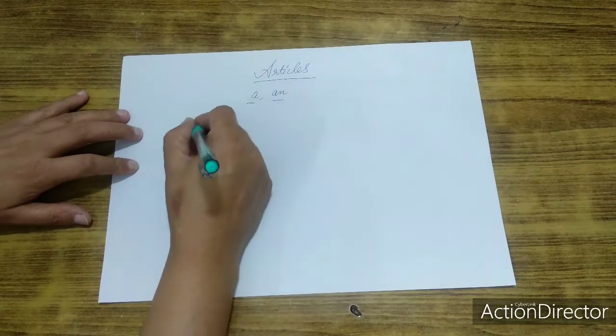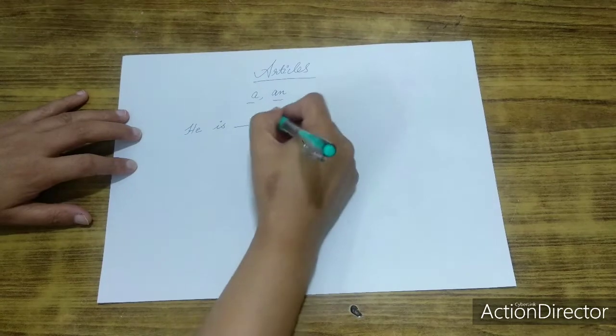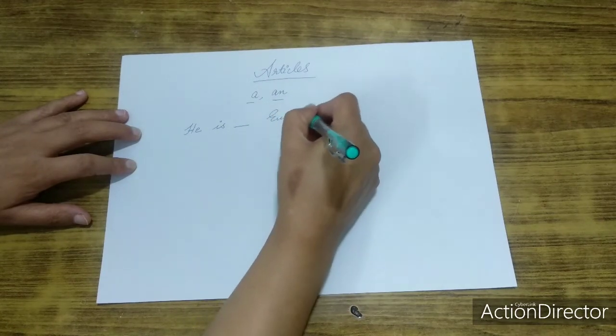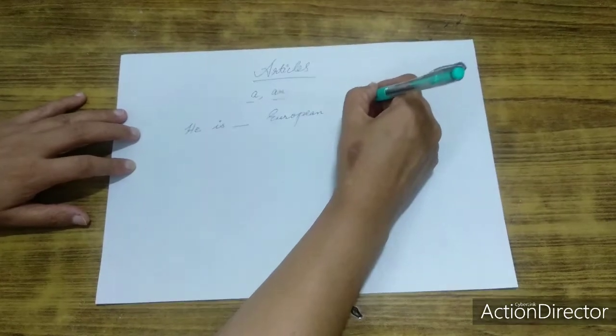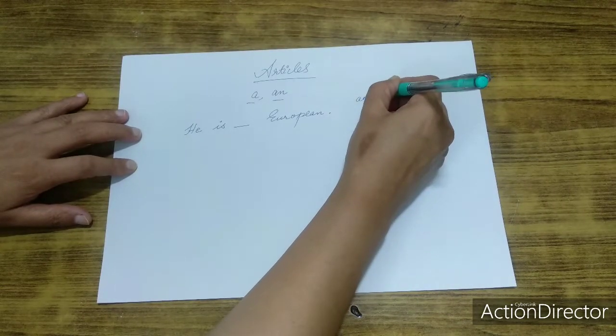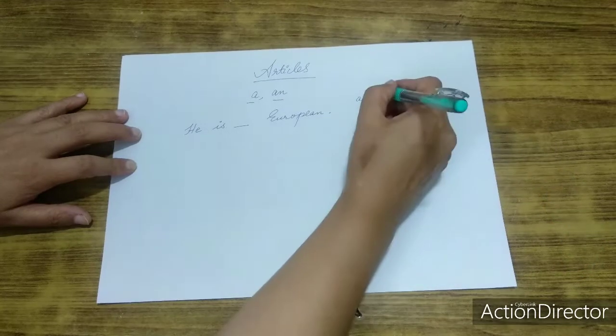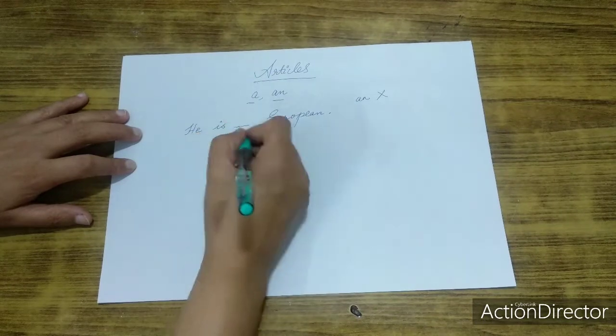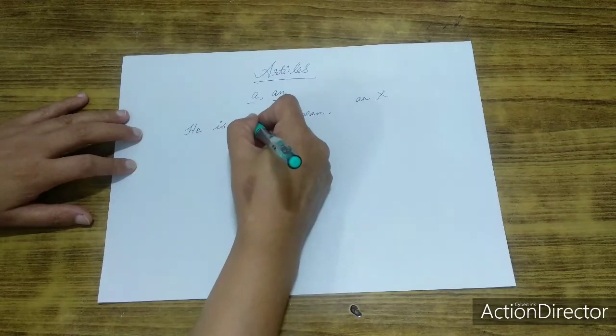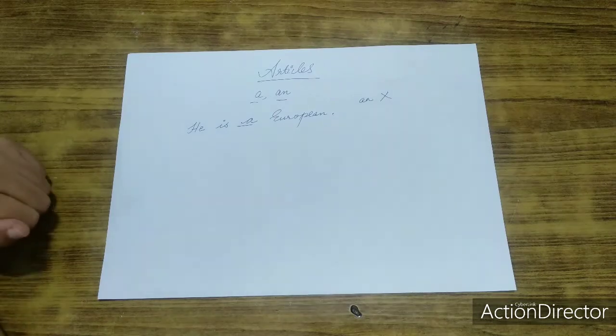And today my focus will be mainly on A and AN. In the Google Classroom, I had given you a question: He is dash European. Most of the answers were A, which is wrong. The correct answer is he is a European. Now let us find out why.